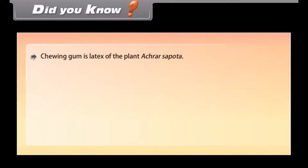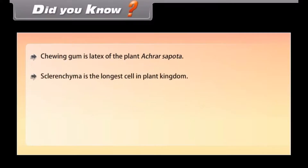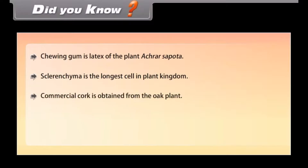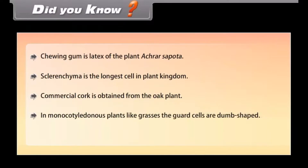Did you know? Chewing gum is the latex of the plant Acras sapota. Sclerenchyma is the longest cell in the plant kingdom. Commercial cork is obtained from the oak plant. In monocotyledonous plants like grasses, the guard cells are dumb-bell shaped.